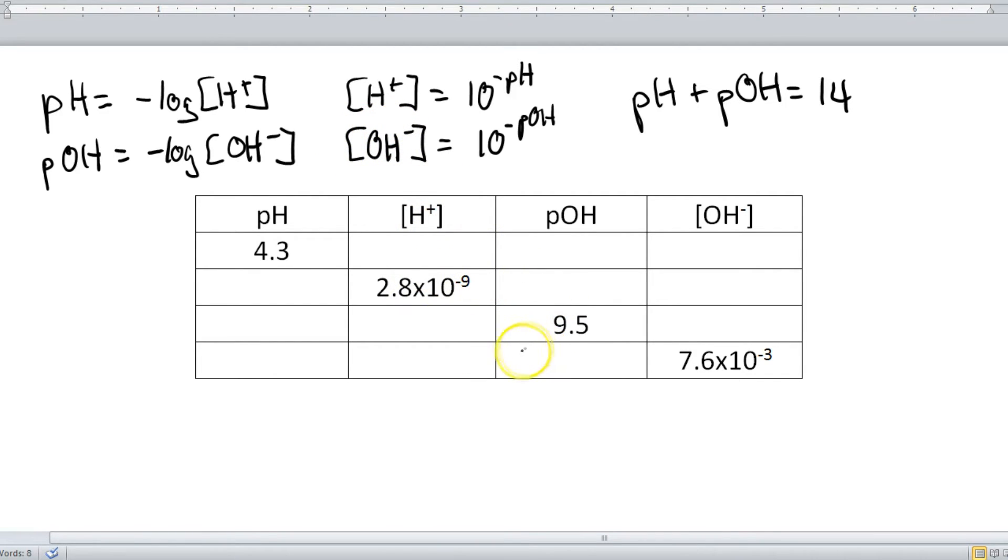And if you look at our table here, you can see that essentially what we're supposed to be able to do is to take one of the four concepts and be able to find the other three. And trust me, it's a lot easier than it looks.